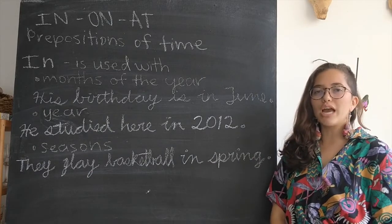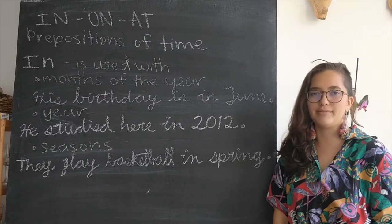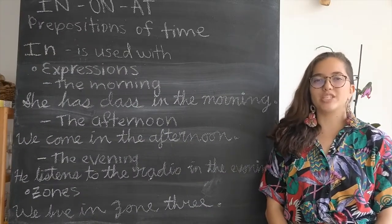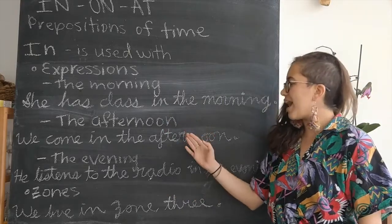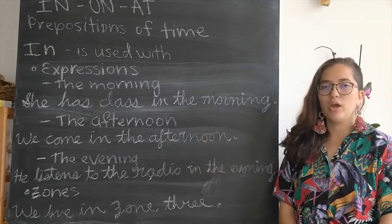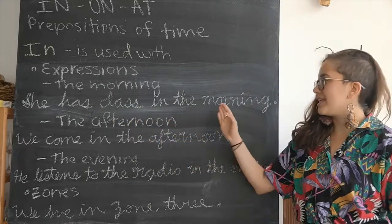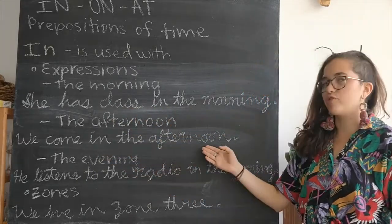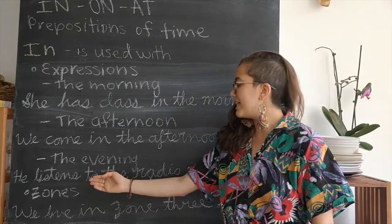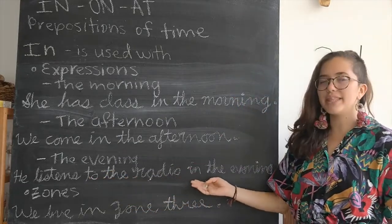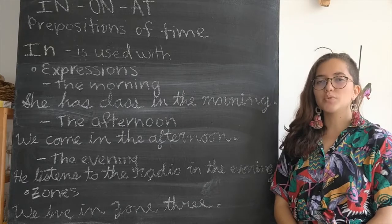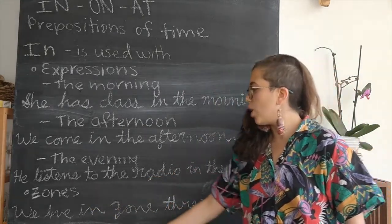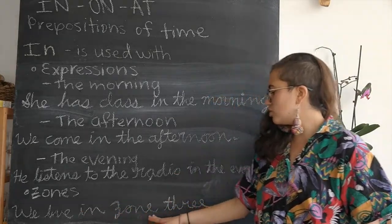Now let's look at some other forms when we use in. We also use in with expressions the morning, the afternoon and the evening. We would say she has class in the morning. We come in the afternoon. He listens to the radio in the evening. And the last way we use in is with zones, so we would say we live in zone 3.